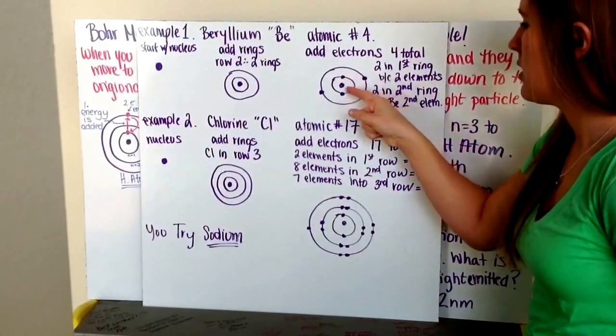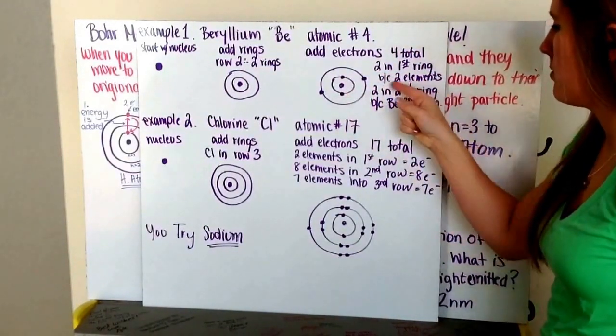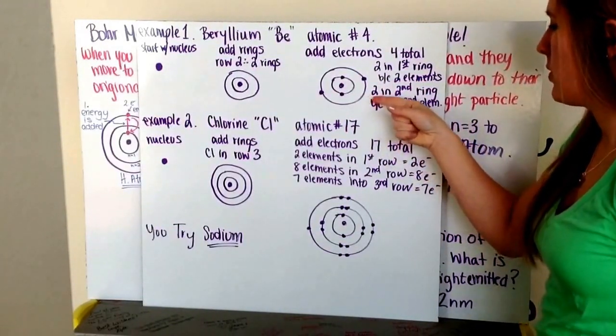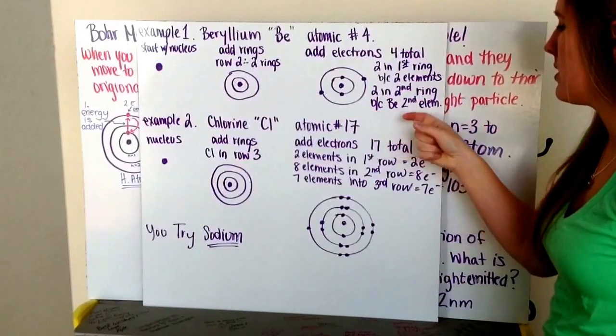Two go in the first ring, here and here, because there's two elements in the first row of the periodic table. And the next two are going to go in the second ring, because beryllium is the second element.